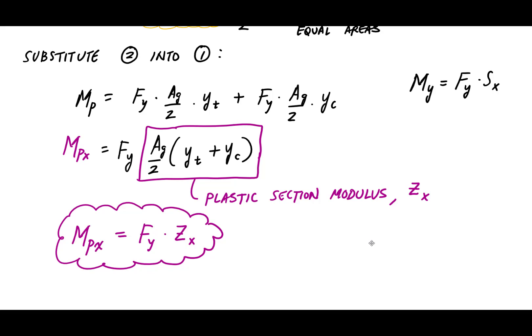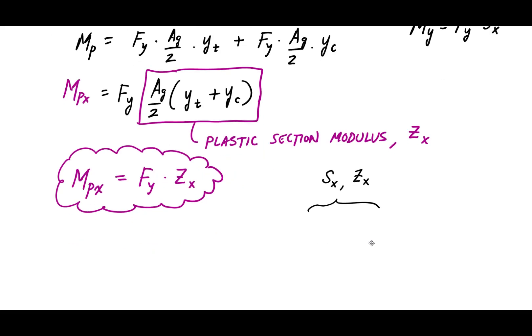Hopefully that was helpful. What's up next is understanding how to calculate these section properties — in particular SX and ZX. To get those, we also need to understand centroid calculations and moments of inertia, so we'll make sure we know how to do those too. Some examples are coming up.